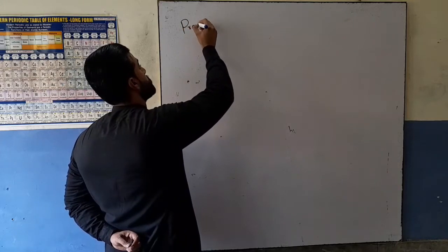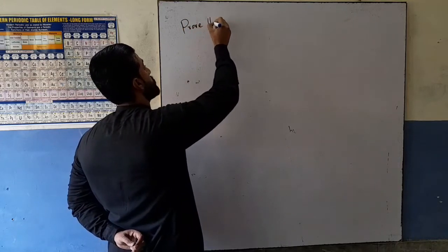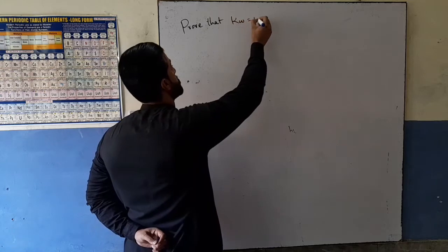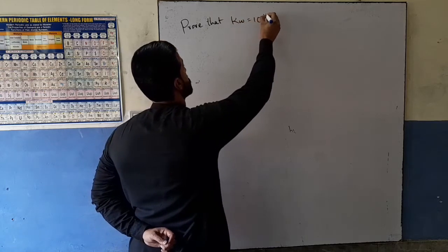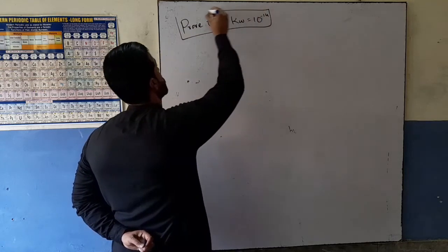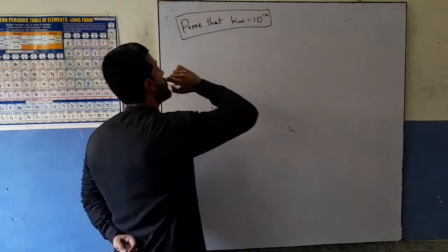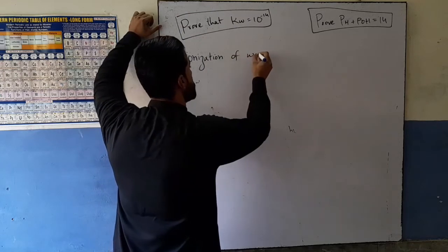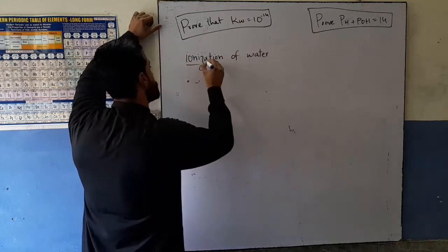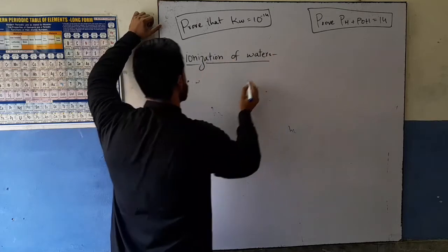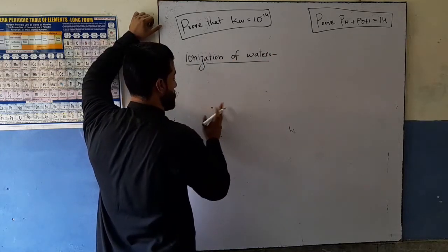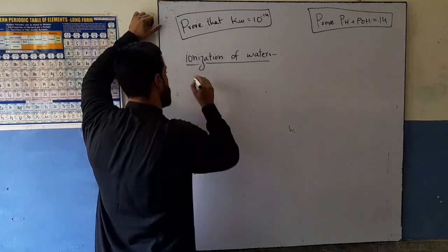The proof that Kw is equal to 10 to the power minus 14. Question number one: water ionization. Why is the pH of water 7 — not 9, not 6?